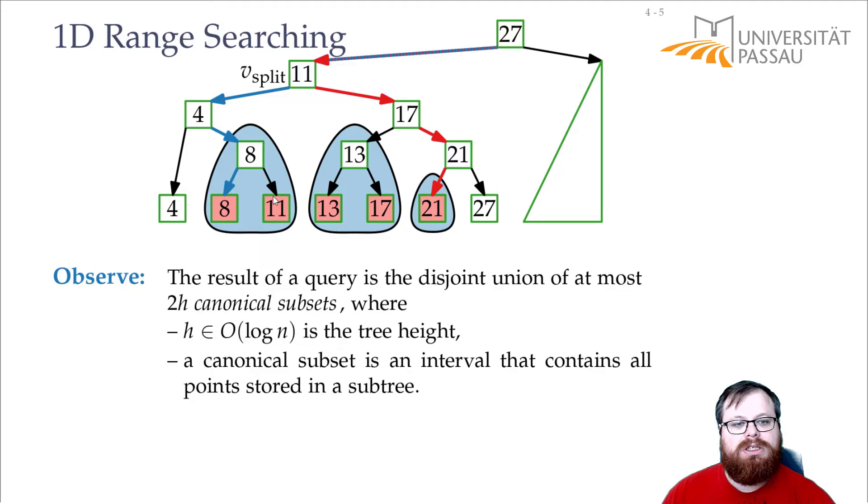So if every internal node knows exactly what elements lie in my subtree, then with these canonical sets we can very quickly report them by just saying, okay, these are my subsets, every subset gives me its elements. And then we're done with reporting it. And we don't have to walk through the tree structure anymore. We can directly read it from those canonical subsets.